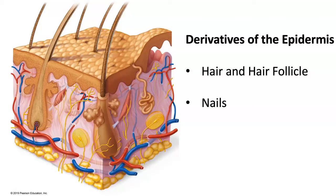In this video we'll take a closer look at two derivatives of the epidermis: a hair and hair follicle, and nails. To be a derivative of the epidermis means that that structure is made of the epidermis. Here I'm tracing the boundary of the epidermis, and you can notice that the sebaceous gland, the hair, and the hair follicle are all an invagination of the epidermis — it's like the epidermis is burrowing down into the dermis.